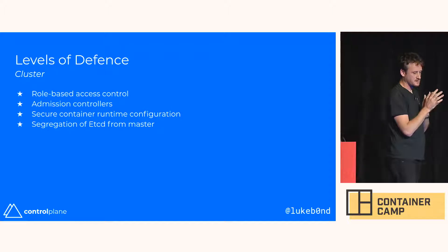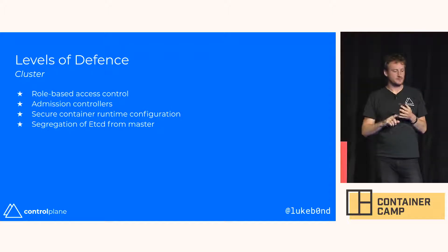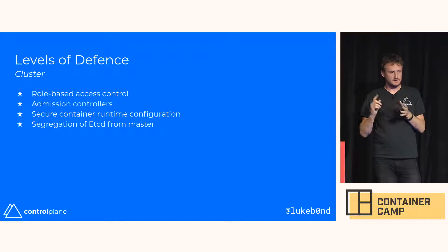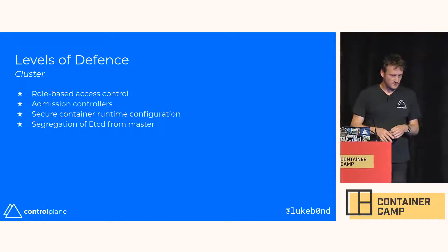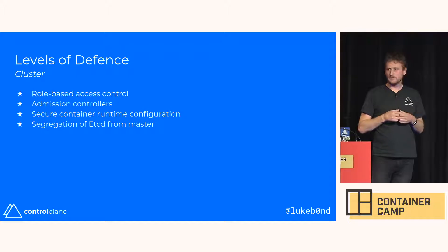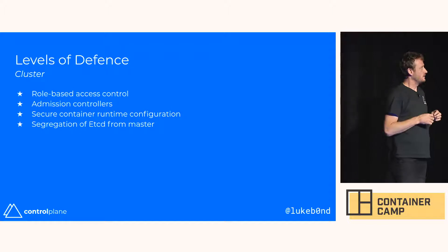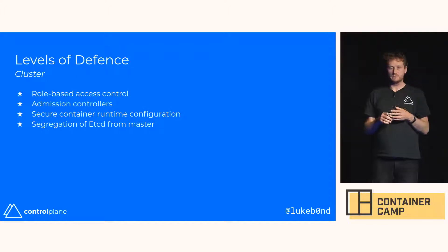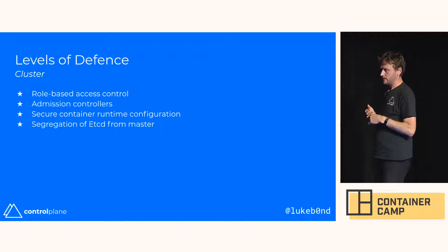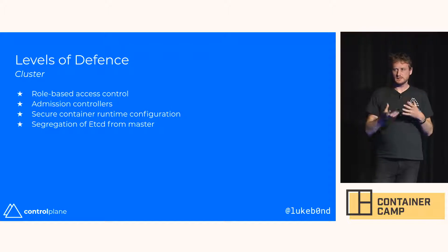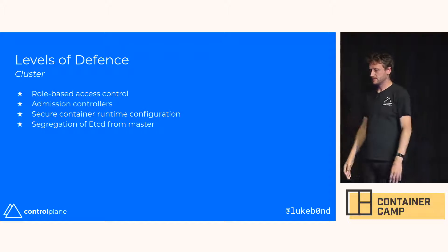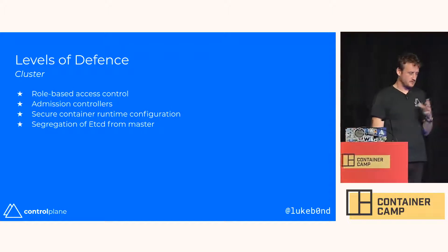At the cluster level, role-based access control is perhaps the most important control. We also have admission controllers — one of Kubernetes' greatest features. There's no way to deploy anything into Kubernetes without using the API, and admission controllers let you put checks at those gateways. Make sure your container runtime configuration and API configuration are sound — tools like kube-bench and docker-bench can check those. Also, etcd should be separate from the master node; if you can attack the master and reach etcd, it's the most critical piece of information in your whole cluster.